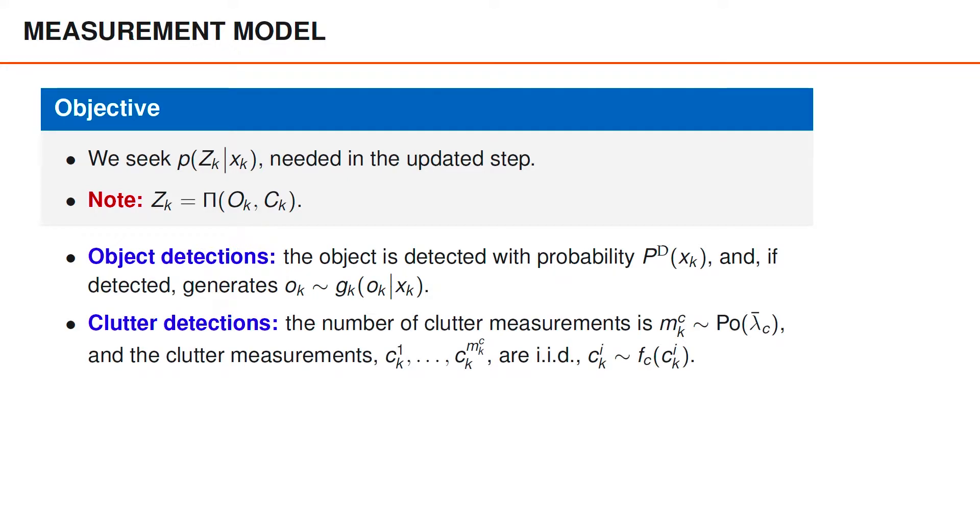Also the clutter matrix capital C_k contains m_k^c measurements, where m_k^c is Poisson distributed with mean lambda bar c, and the measurements are independent and identically distributed according to the spatial pdf f_c.